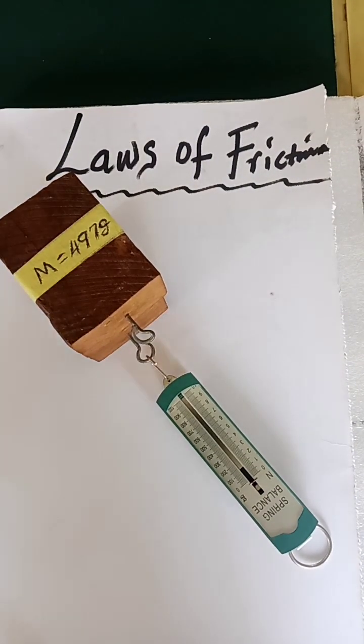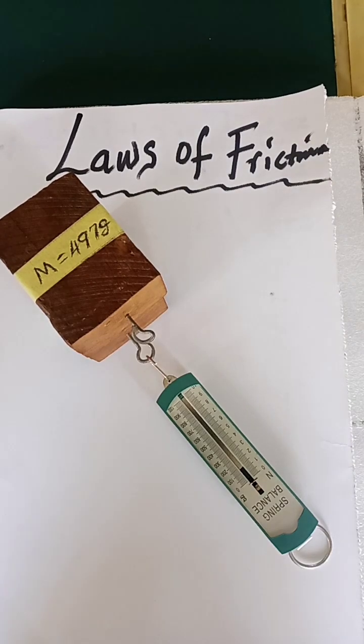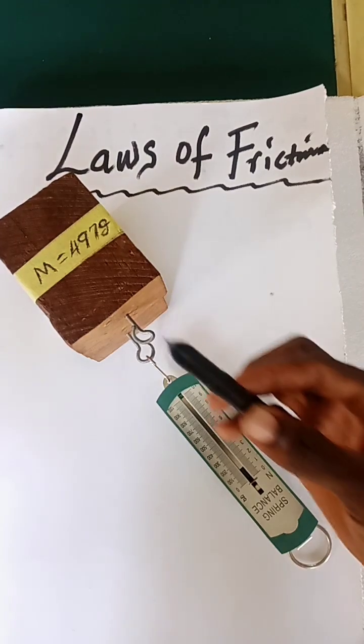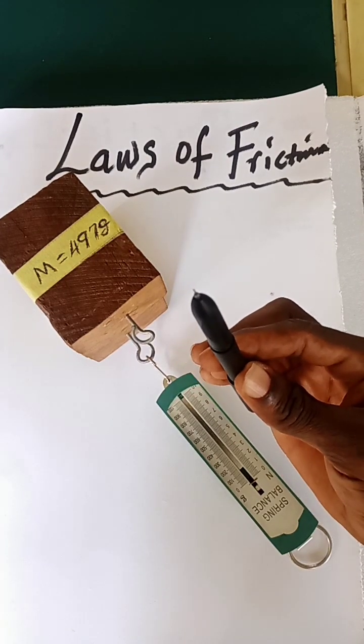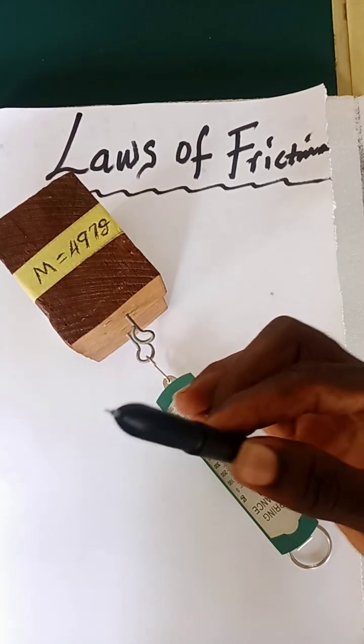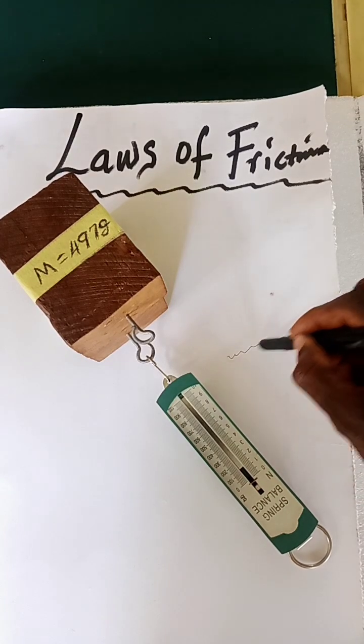Law number four: friction is independent on the area of the surface in contact. That is to say, if the area of the surface is as tiny as the mouth of this pen, frictional force will still act.